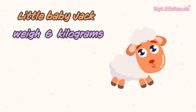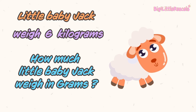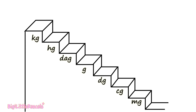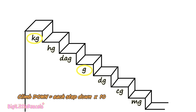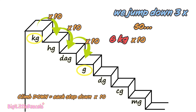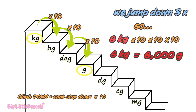Little Baby Jack weighs 6 kilograms — how much does that equal in grams? Find kilogram on the stair, then find gram. Jump down from kilogram to gram: 1, 2, and 3 jumps, each multiplied by 10. So 6 kilograms multiplied by 10, by 10, and by 10 equals 6000 grams.